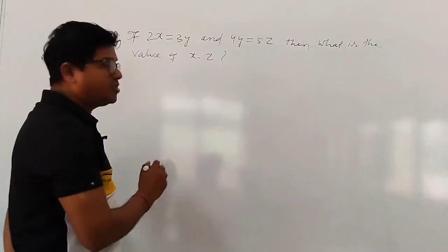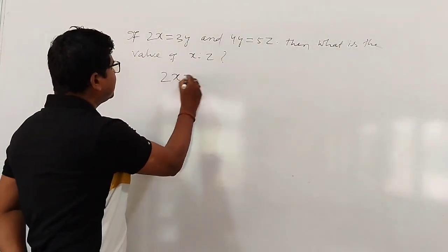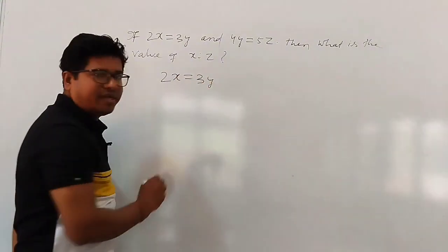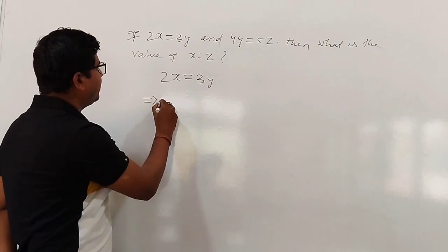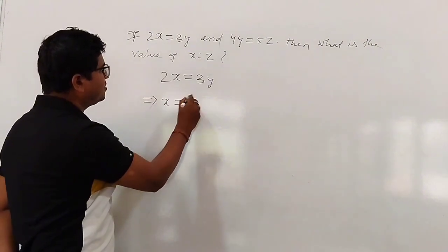Now see, 2x equals 3y, then this implies x equals 3 by 2y.